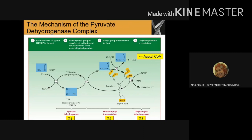In step three, the acetyl group is transferred to coenzyme A, which acts as a carrier. The acetyl group bound to lipoic acid transfers to coenzyme A, producing acetyl-CoA. What remains is dihydrolipoamide. This dihydrolipoamide can be re-oxidized to regenerate lipoamide. Remember, the substrate TPP is regenerated at step two, and lipoamide is regenerated at step four.